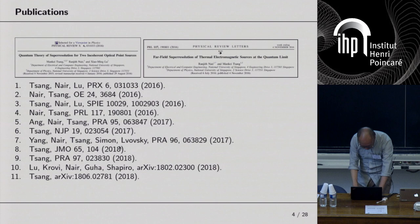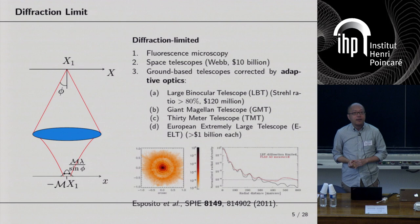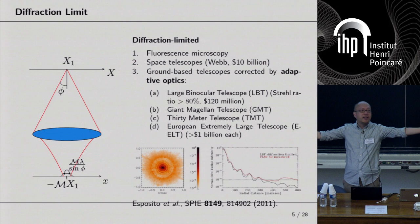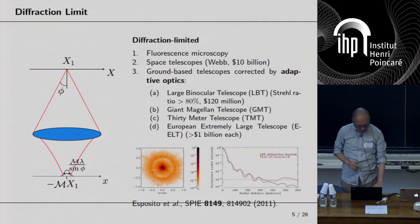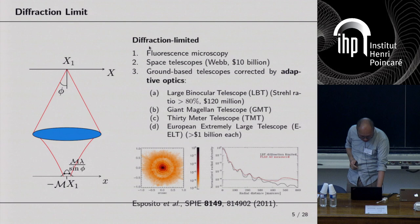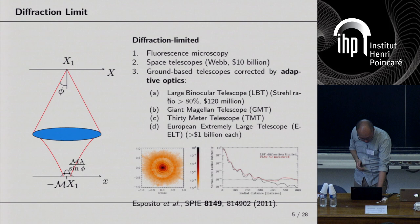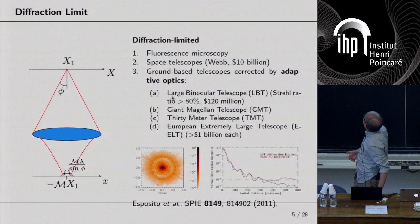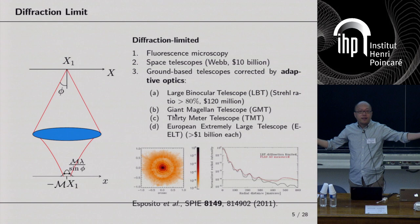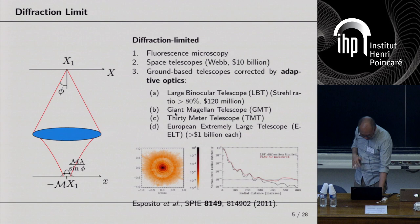Let me start by introducing the basic concepts. The diffraction limit — I hope you're all familiar with it. It's the basic wave nature of light: light diffracts, and a finite aperture cuts off the higher spatial frequency components, which introduces blurring. For telescopes in space, you don't have atmospheric fluctuations, so you're limited by the wave nature of light. Even for ground-based telescopes, adaptive optics has become so good they are very close to the diffraction limit — for example, the Large Binocular Telescope in Arizona achieves a Strehl ratio bigger than 80%.